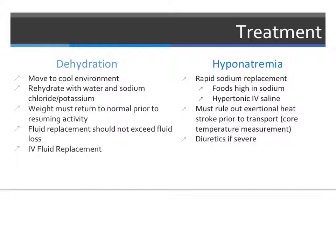Treatment for dehydration and hyponatremia involves reversing the cause — either too little salt or too little water. To treat dehydration, move the athlete to a cool environment and rehydrate with water and sodium to encourage water resorption. Weight must return to normal prior to resuming physical activity, and fluid replacement should not exceed fluid loss. If severe, the dehydrated athlete may require IV fluid replacement. When treating hyponatremia, the goal is rapid sodium replacement with foods high in sodium and low in fluid content. The athlete may require IV hypertonic saline if severe.